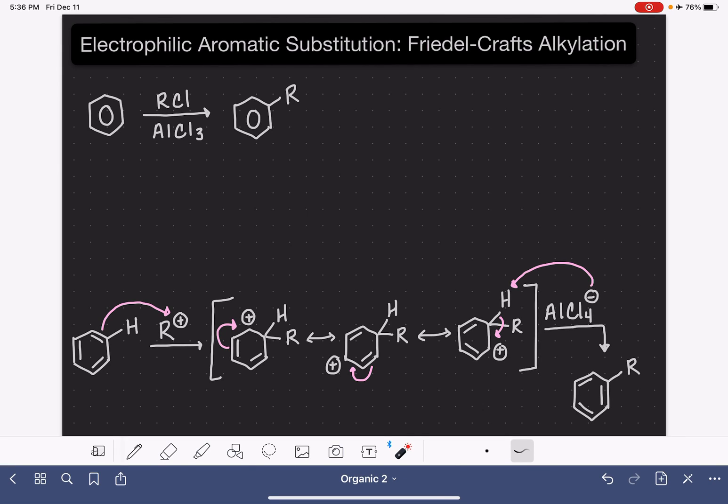The Friedel-Crafts alkylation reaction allows us to put an alkyl group or an R group on a benzene ring. The reagents we use for this is an alkyl chloride with aluminum trichloride catalyst. Let's begin by taking a look at the mechanism for this reaction.